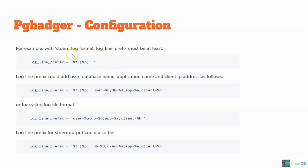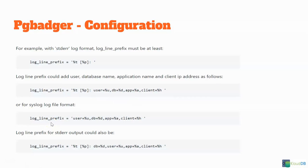With a standard log format, you have at least this, and then if we add user, database name, application name, and client IP, it should be something like this. Here are two more formats. Basically, check your logline prefix. Sometimes when you run pgbadger and you may not see the desired output, you may need to add the logline prefix as a parameter to your pgbadger command.